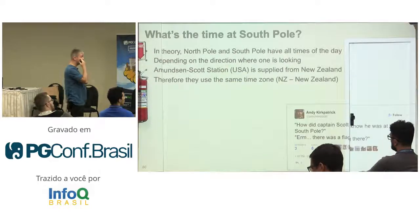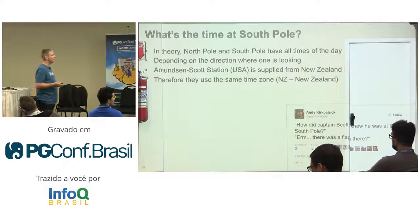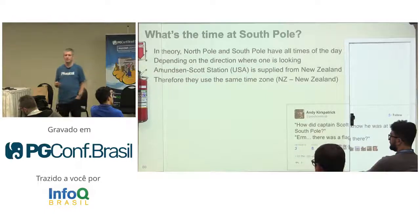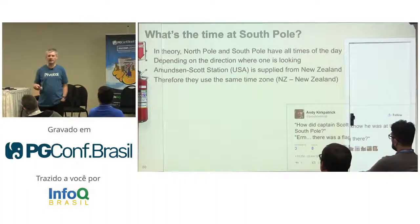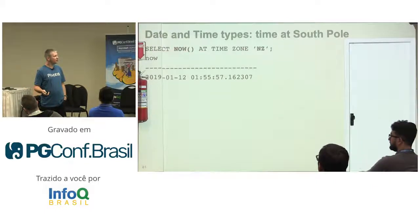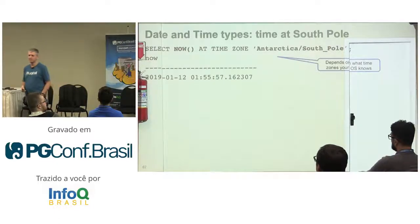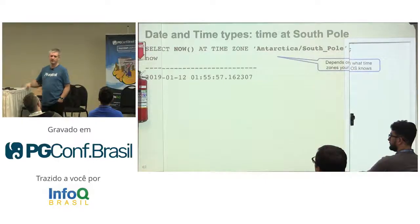Coming back to my question about the South Pole: at the South Pole you can technically use any time zone. There's a research station called Amundsen-Scott Station, operated by the United States but supplied from New Zealand, and for convenience they use New Zealand time. So we can say SELECT now() AT TIME ZONE 'NZ' to find out what time it is at Antarctica. Even better: the South Pole has its own time zone, and there are about 11 or 12 different time zones just for Antarctica in the time zone database.